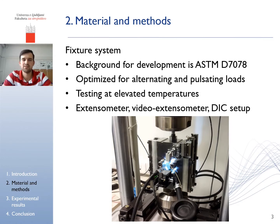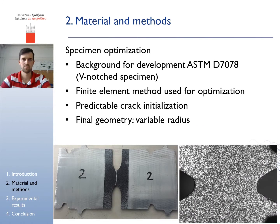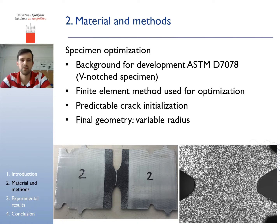We optimized the standard fixtures for alternating and pulsating loads with a possibility of testing at elevated temperatures. Shear strain can be measured by extensometer, video extensometer, and DIC. During the optimization of the fixture system, we were also optimizing the specimen geometry. The initial geometry was based on the before-mentioned standard in the shape of a V-notch specimen, which in our case was not suitable because of high stress concentration in the root of the notch. The finite element optimization method was used to derive the final geometry, which has a variable radius and predictable crack nucleation.